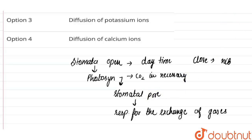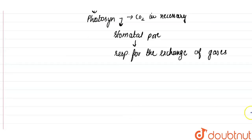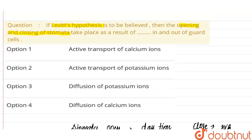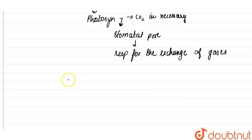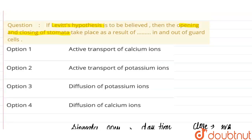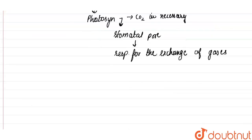According to Levitt's hypothesis, the active transport of potassium ions is responsible for the opening and closing of stomata — that is, the movement of potassium ions in and out of the guard cells.